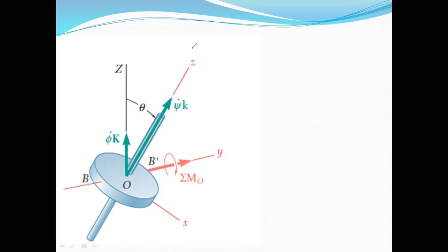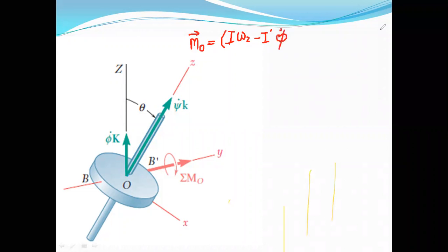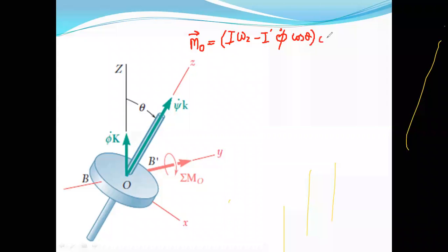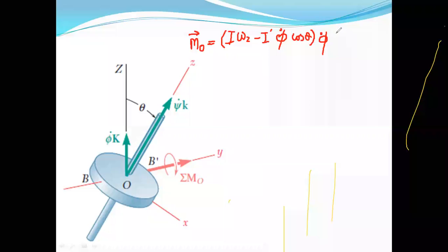In the case of steady precession, the last equation obtained in the previous class was: summation of all the moments about point O equals the moment of inertia about the z-axis (I·ω_z) minus I′ (moment of inertia about the transverse axis x and y) times φ̇·cos θ, multiplied by φ̇·sin θ, j-cap.